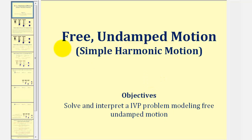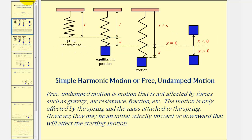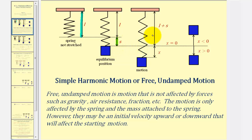Let's begin by setting up our spring system. We'll start with a spring of natural length L that's not stretched. Next, we'll attach a mass to the spring which will elongate the spring, and S will be the spring elongation — the amount the spring is stretched. The mass will then be moved above or below the equilibrium position, which we'll call displacement. Looking at this diagram, the displacement would be X. If the displacement is below the equilibrium position, X is positive.